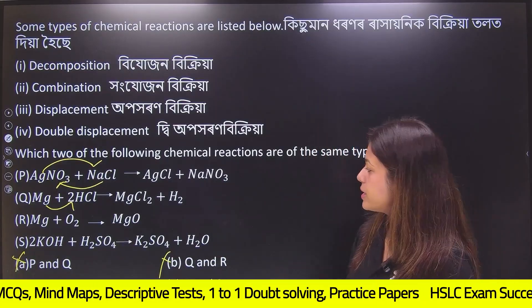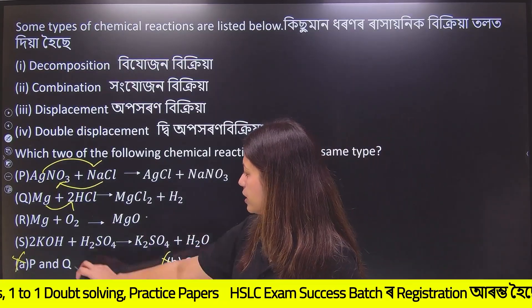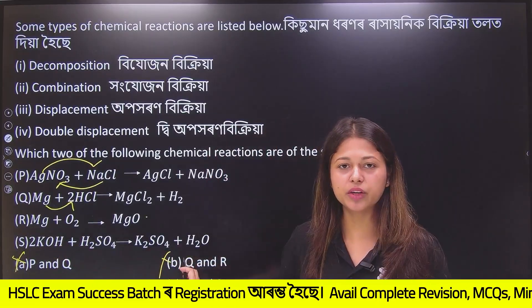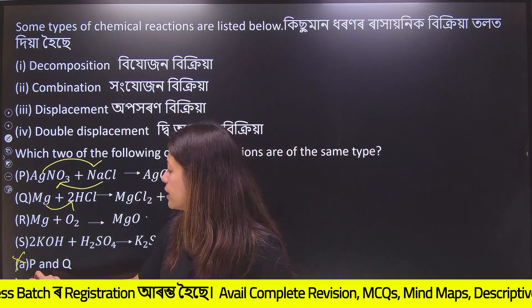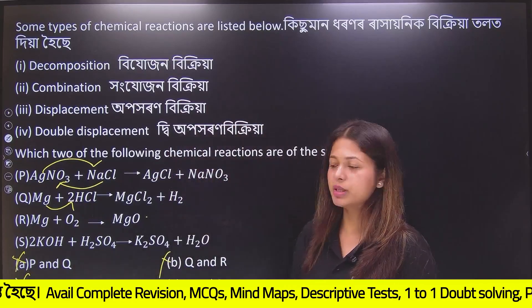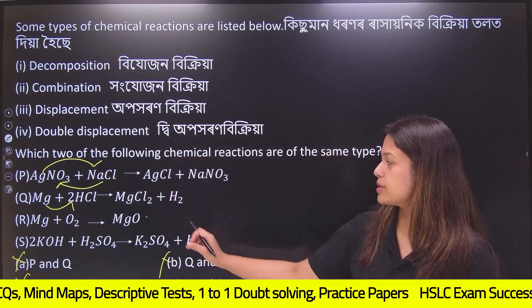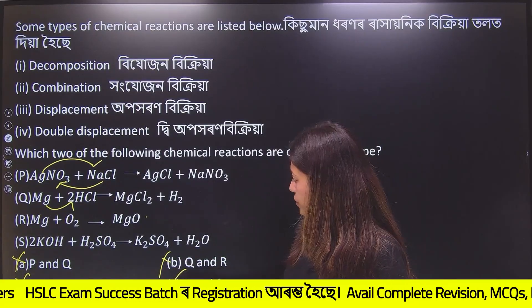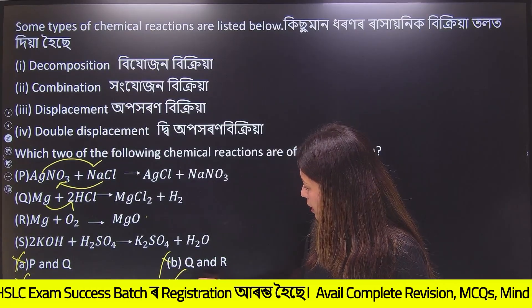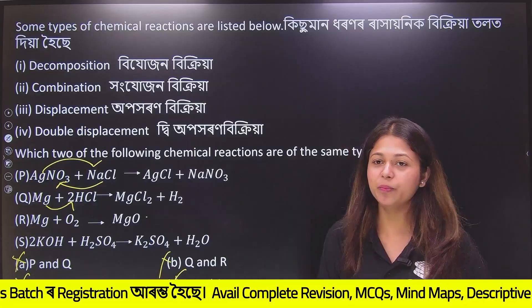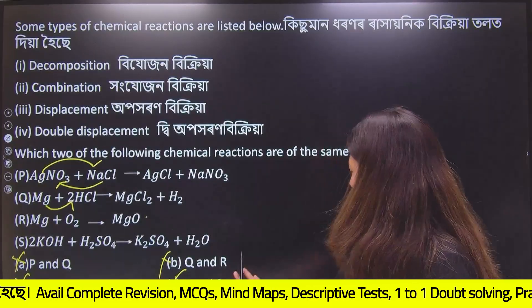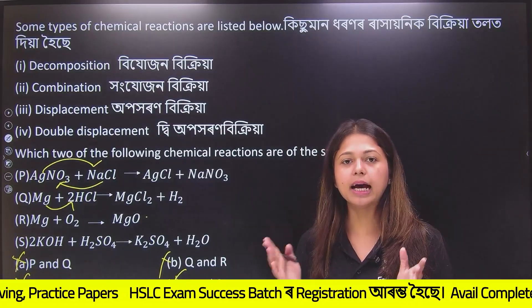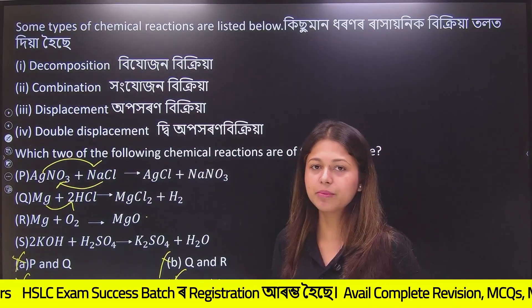Q is a combination reaction. R and S: R is a combination reaction, S is a double displacement reaction. So P, R, O, S — P and S are the same type: both are double displacement reactions. Option number D is correct. P, R, O, S — that reaction is the same type of reaction.